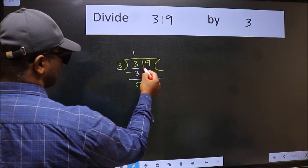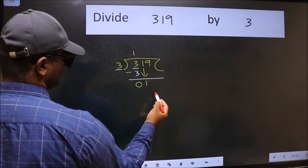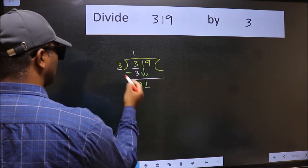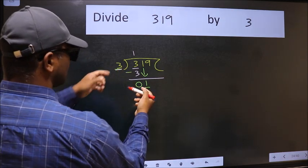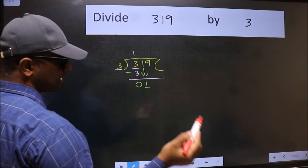After this, bring down the beside number. So 1 down. Now here we have 1 and here 3. 1 is smaller than 3. So we should bring down the second number.